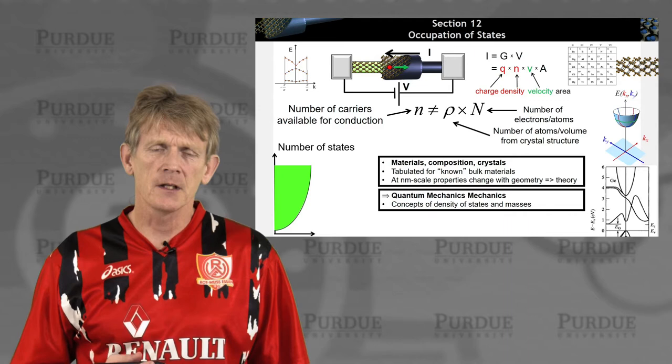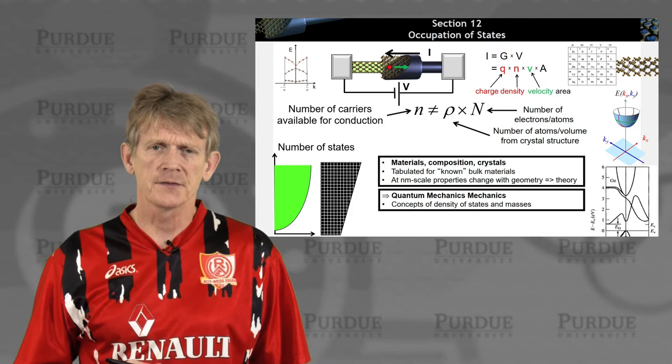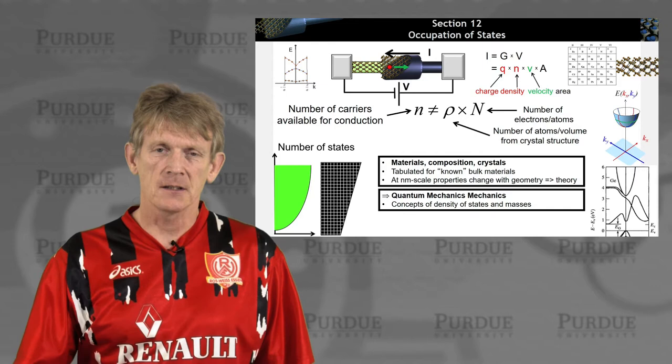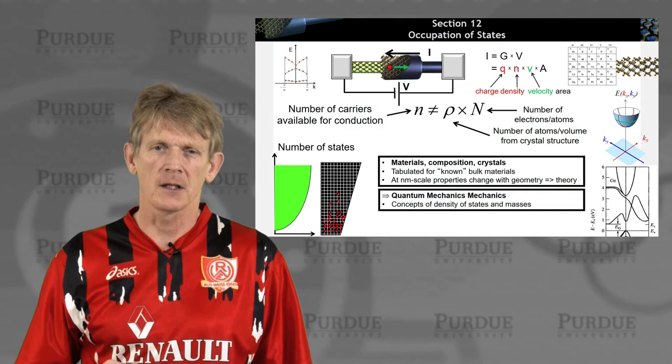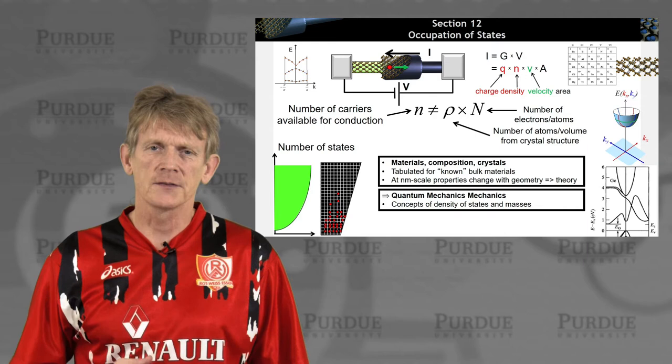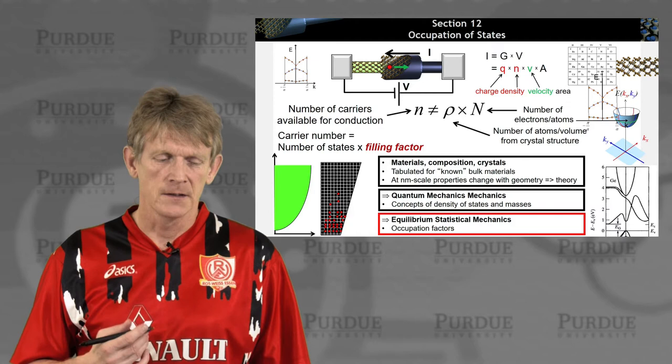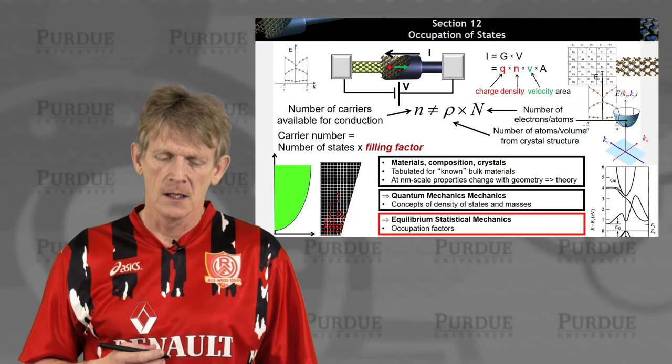From the number of states, we can now represent them with a discrete number of states. We can imagine this is kind of like an inverted skyscraper. The challenge is how to place all these electrons into the skyscraper — how to populate these apartments with people. In this section, we'll study how the occupancy statistics are managed and computed. We will calculate the filling factors, the occupation factors, using equilibrium statistical mechanics.